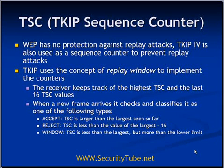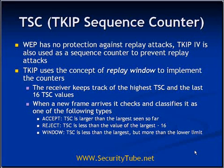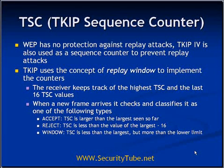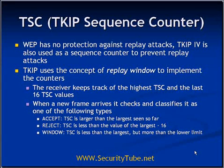As explained, the IV or initialization vector is used to generate the key stream from the key. The IV has another role in TKIP: it is also used as a TKIP sequence counter (TSC). WEP had no protection against replay attacks, but in TKIP, the IV is used as a sequence counter to prevent replay attacks. TKIP uses the concept of a replay window to implement this counter. The receiver keeps track of the highest TSC value along with the last 16 TSC values. The TSC is a monotonically increasing function. Whenever the transmitter sends a packet, it increments the TSC and sends the packet.